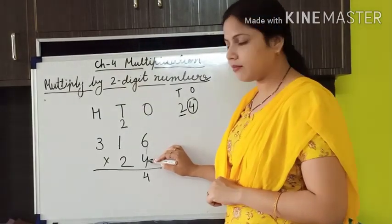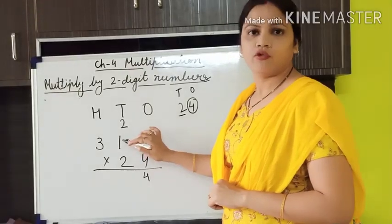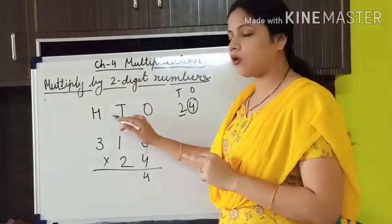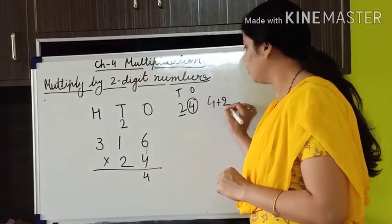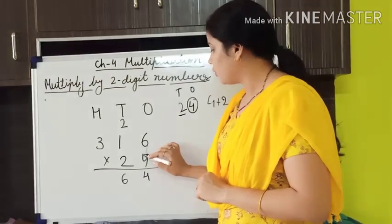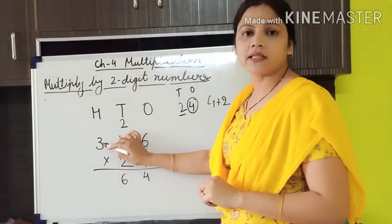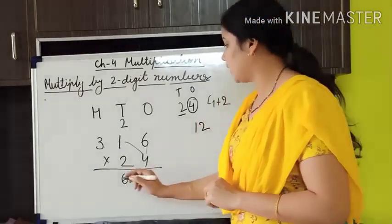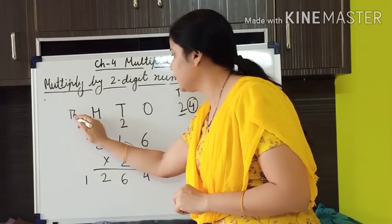Now we have to multiply this digit at the 10s position. 4 ones are 4, and then we add the 2 that was carried forward: 4 plus 2 is 6. We write 6 here. Now we multiply by the digit at the 100s position: 4 threes are 12. We write 2 at the 100s position and 1 at the new 1000s position.